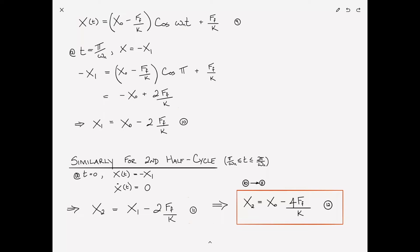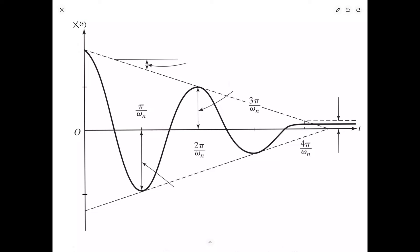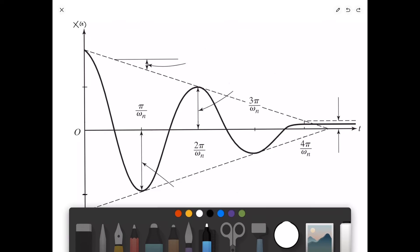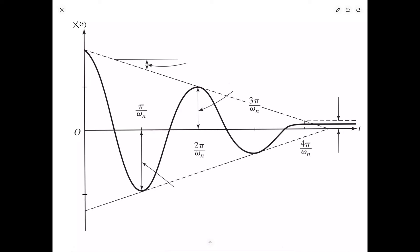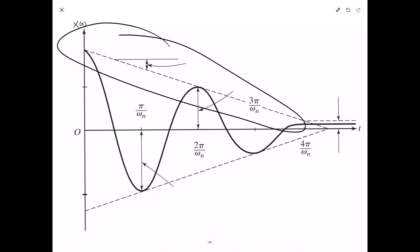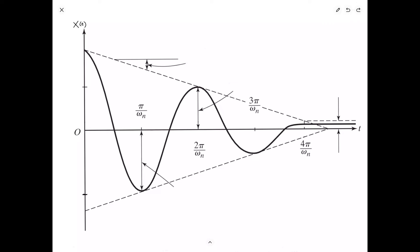We now have all the pieces to understand the response curve of the simple harmonic oscillator with Coulomb damping. What should be immediately apparent is that the peaks are reducing linearly — very different from viscous damping, where we had exponential decay. The peaks are joined by a straight line.